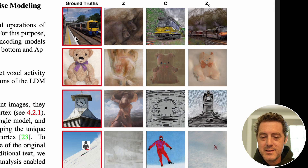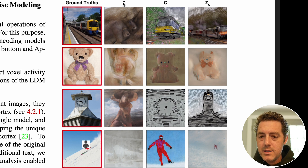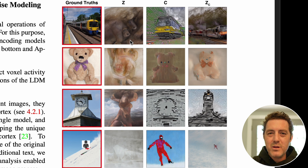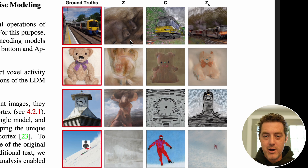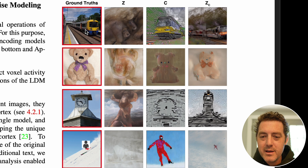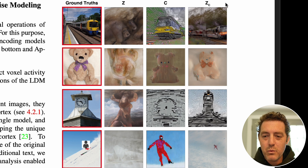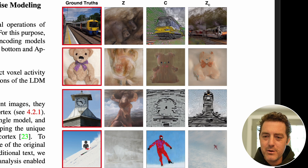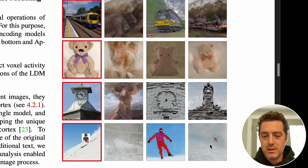These are the ground truths on the left with the red outlines — a train, a teddy bear, a clock tower, and somebody skiing. The Z column images are visually consistent but you can't really tell what they are — if you blur your eyes you can see the silhouettes are generally similar. The C column images look like the subject but are visually inconsistent with the original — here's a train heading in the opposite direction. Then ZC combines both, and now this one is even better: the train is heading in the right direction, the teddy bear looks really good, the clock tower looks good, and the person skiing looks pretty good.